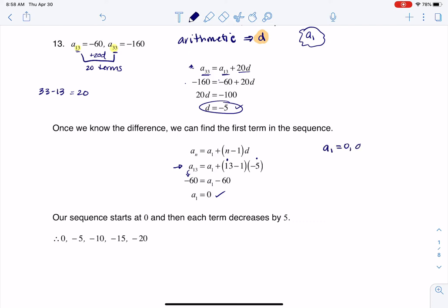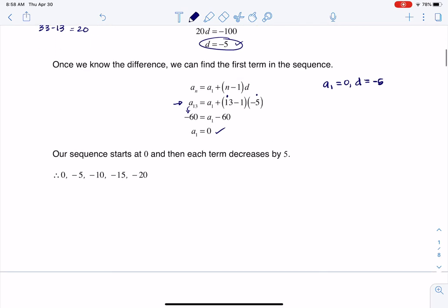So if a sub 1 is 0 and we know d is negative 5, then I can go write the first few terms or the first five terms as directed. A sub 1 is 0. A sub 2 is negative 5. A sub 3, a sub 4, and a sub 5. There we go.